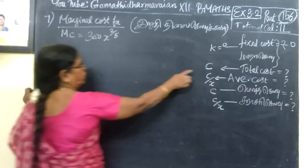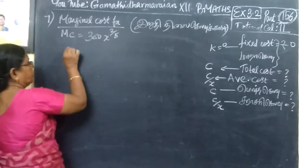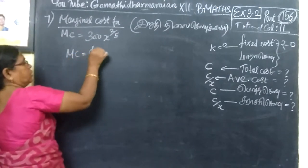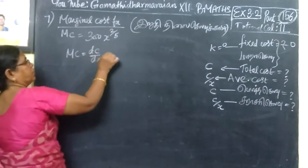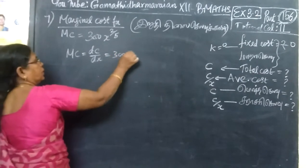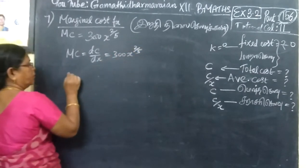So, marginal cost is DC by DX. This is 300x power 2 by 5.